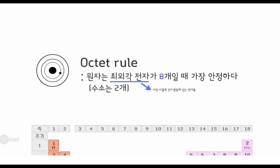이러한 원자는 옥텟룰이라는 법칙을 만족합니다. 이는 각 원자는 최외각 전자가 8개가 되었을 때 가장 안정하다는 법칙입니다. 이렇듯 최외각 전자의 수는 원자의 안정성에 그리고 반응성에 영향을 미치게 됩니다.